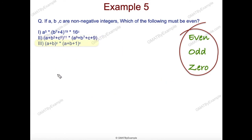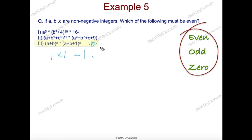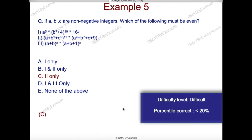For choice three: (A + B)^C times (A + B + 1)^C. When C is 0 — and C is an unknown power that could be even, odd, or zero — as long as A + B is non-zero, you get 1 times 1 equals 1, which is odd. So this value can definitely be odd as well — it is not a must-be-even quantity. Only choice two is definitely even, so the answer is C: choice 2 only. The difficulty level is high — about 20% of people get it correct, meaning 80% fall for one trap or another.